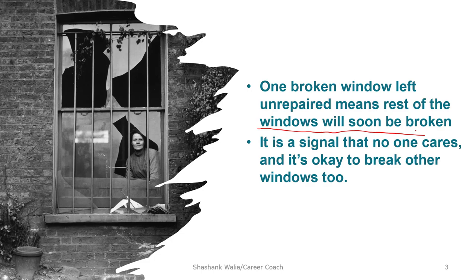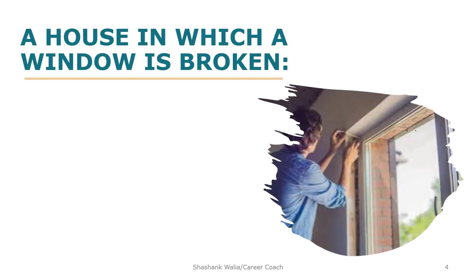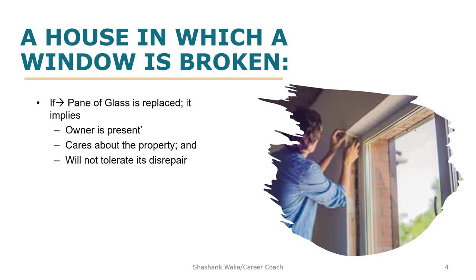If the broken window of a house is left unrepaired, it signals the owner is not available or doesn't care. But if it is repaired, it means the owner is present and cares about the property and will not tolerate its disrepair. This is similar in the field of security — when someone gains unauthorized access to your facility and you let that person come and go freely, it signals that security professionals do not care, and it's okay to breach access control more and more.